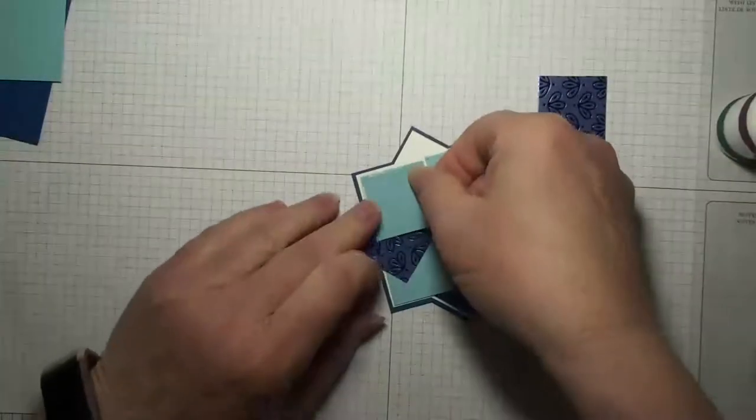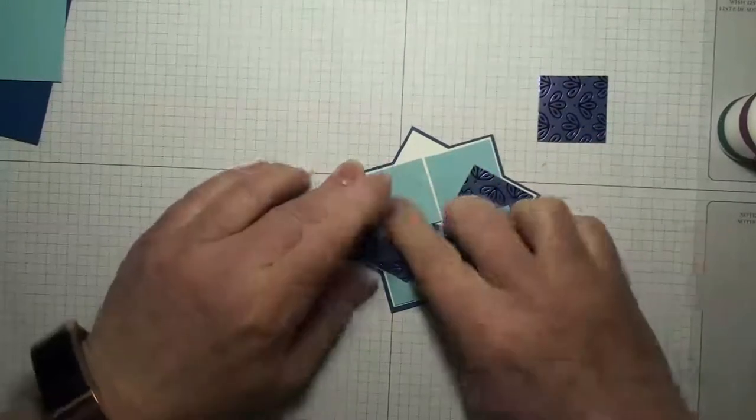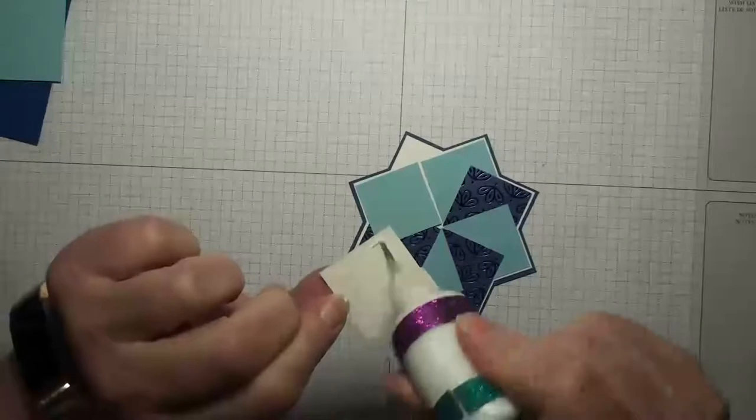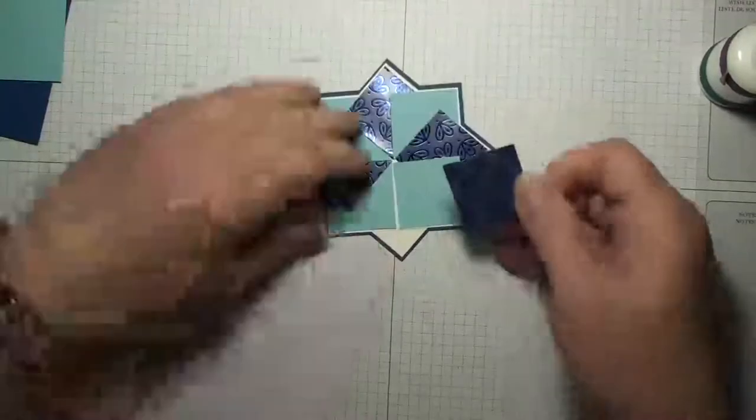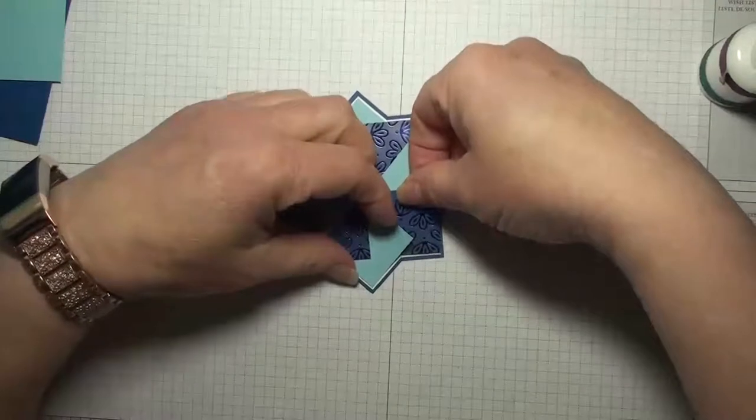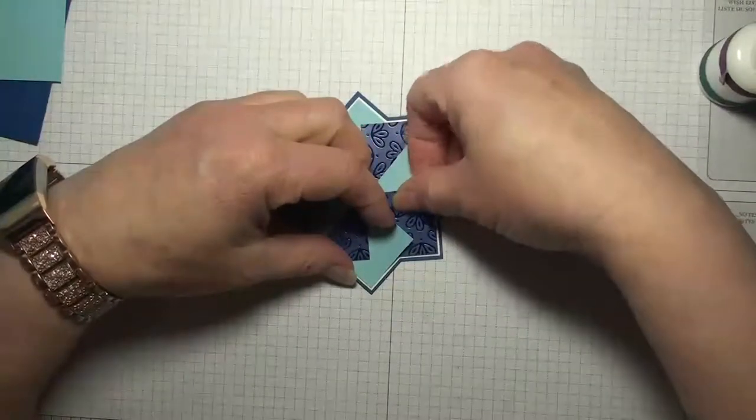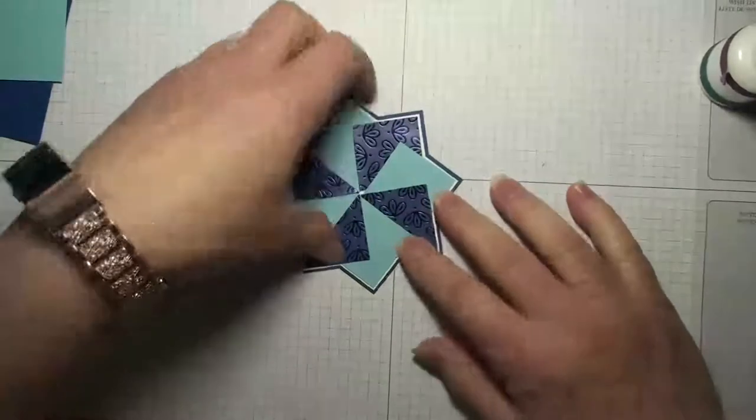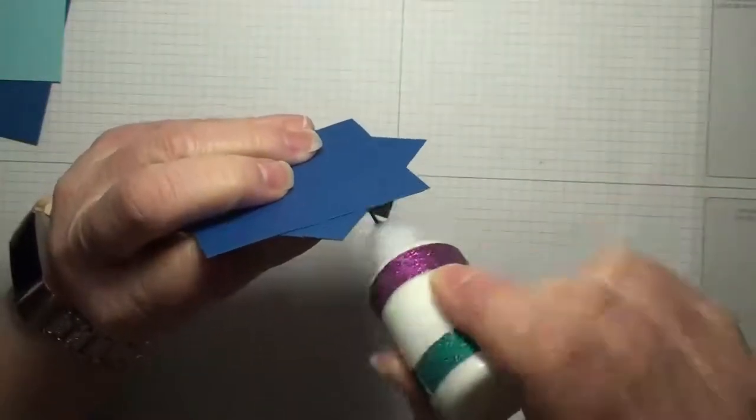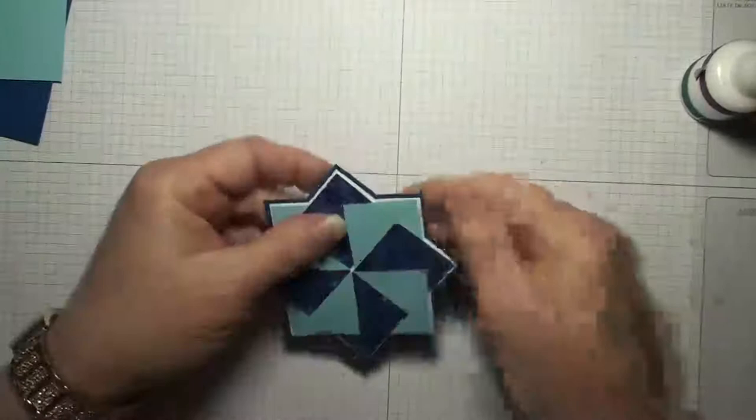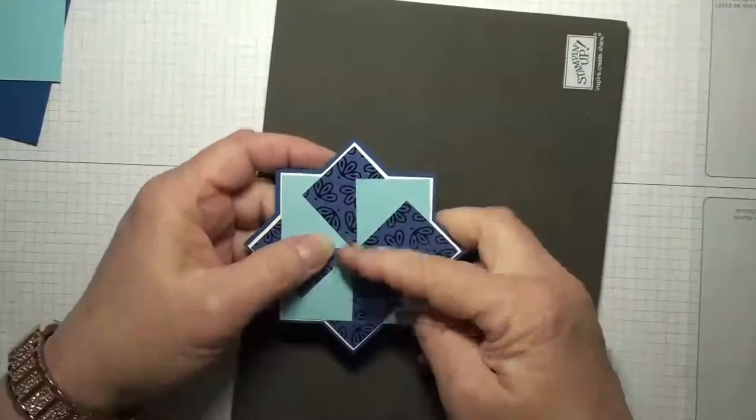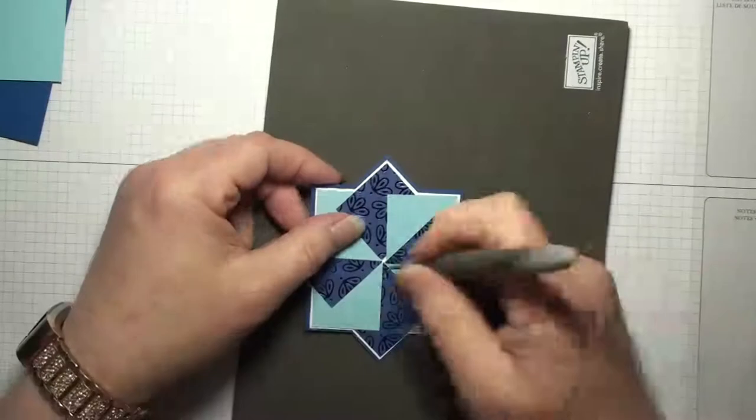Okay and then now we're on our last piece here and what we want to do is we want to put our adhesive on. Then we're going to pick up this piece here and tuck this piece under just like that. See that how that worked? And then I'm going to pick this piece up and just put some adhesive on it and tuck it down. And there you have your pinwheel. Pretty awesome.